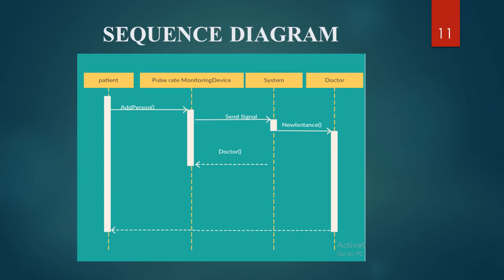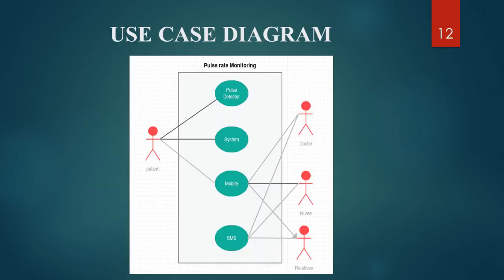In the sequence diagram, the patient is connected to the pulse rate monitoring device. When the pulse is high or low, a signal is sent to the system. The system generates a message and sends it to the mobile device via GSM. Doctors and relatives are connected to the device. In the use case diagram, the patient is connected to the pulse detector system, and the doctor, nurse, and relatives are connected via mobile and SMS.